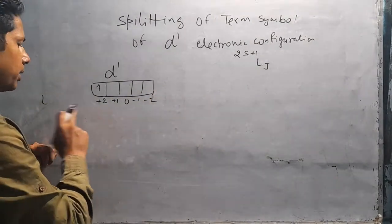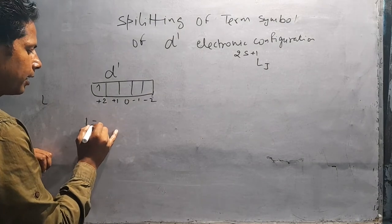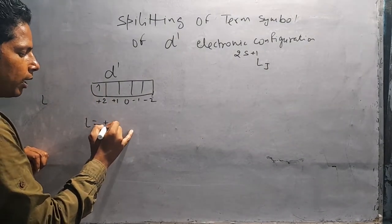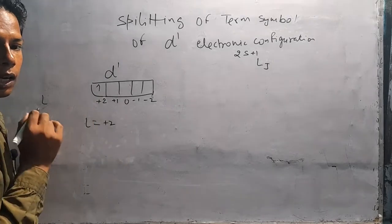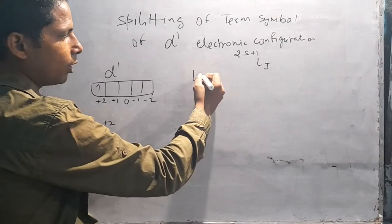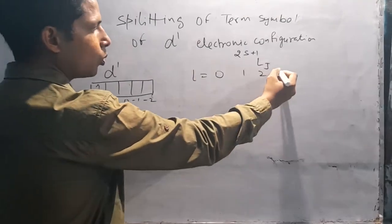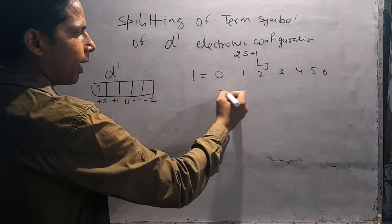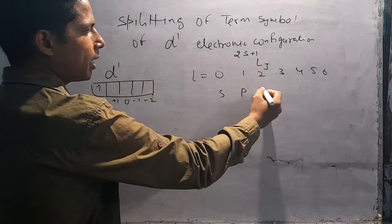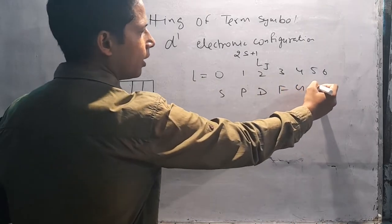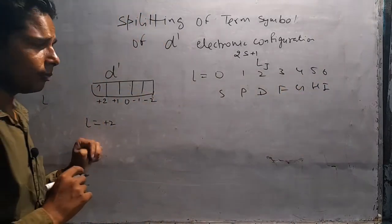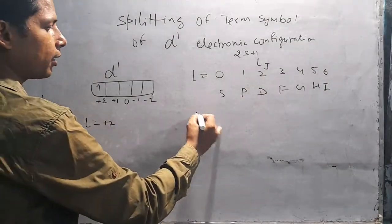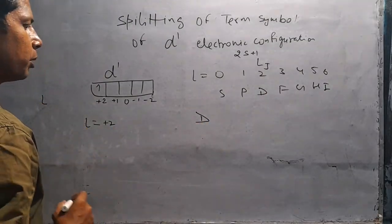हमारे पास सिर्फ एक electron है, इसलिए L की value plus 2 होगी। L की values 0, 1, 2, 3, 4, 5, 6 के लिए S, P, D, F, G, H, I होता है। L की value 2 है, इसलिए term symbol में D निकल के आता है।